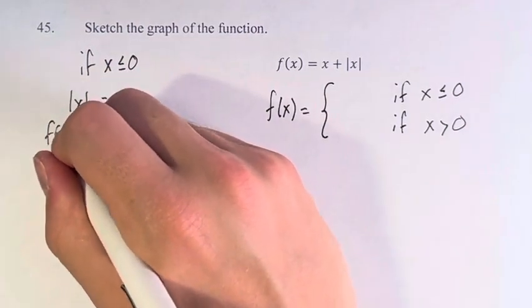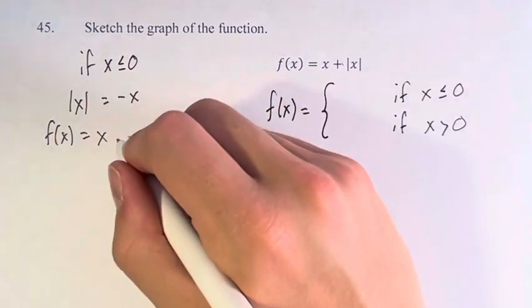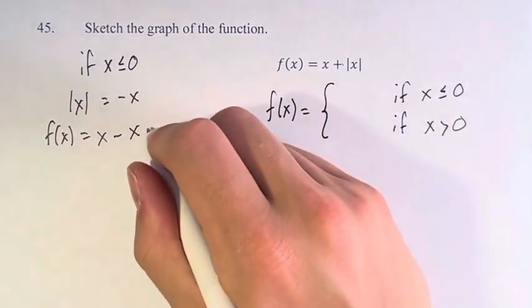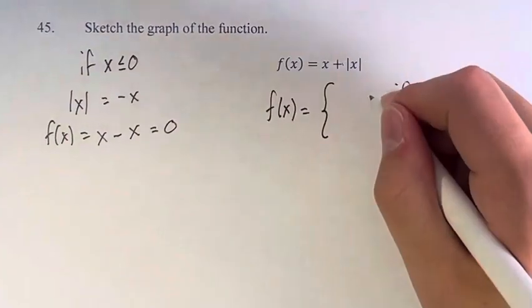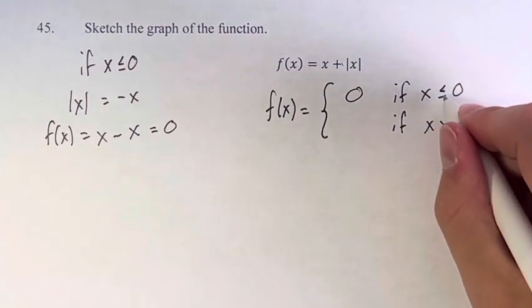Therefore, f(x) is equal to x plus the absolute value of x, which is negative x, so x minus x, which is 0. Therefore, f(x) is equal to 0 if x is less than or equal to 0.